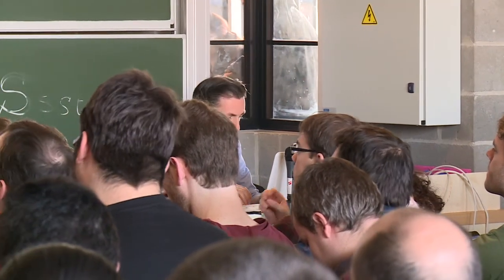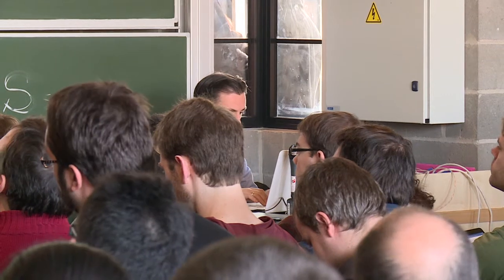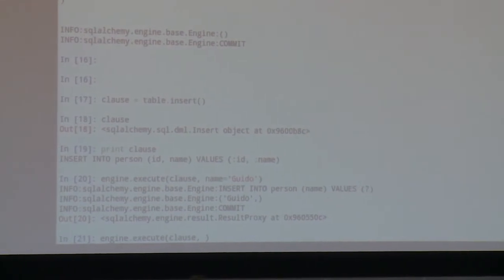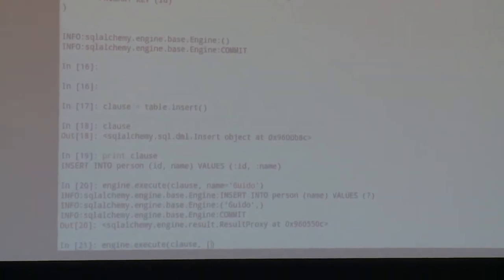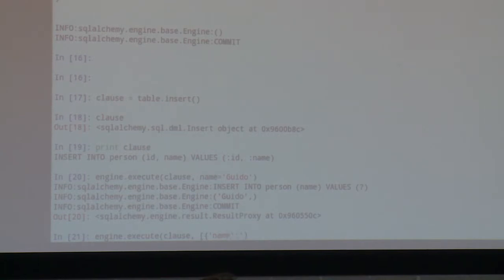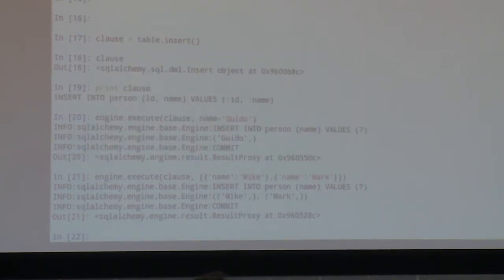We can also insert multiple rows at once — useful when reading a file or working with larger datasets. You just pass a list of dictionaries to the execute method. Let's insert Mike and Mark in our table as well. You see they are inserted in a single statement.